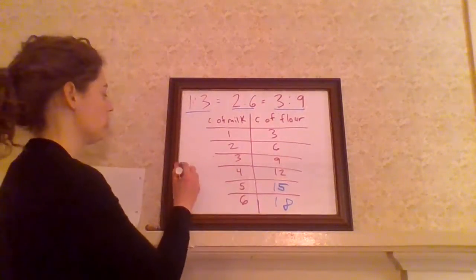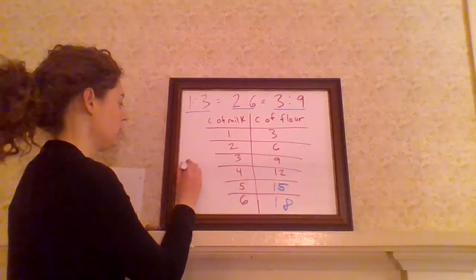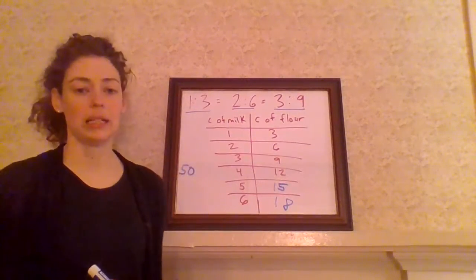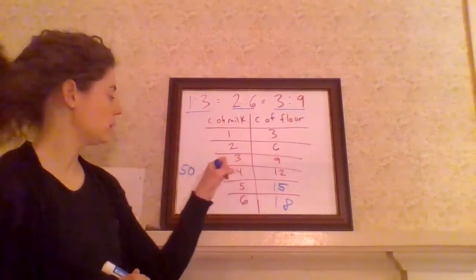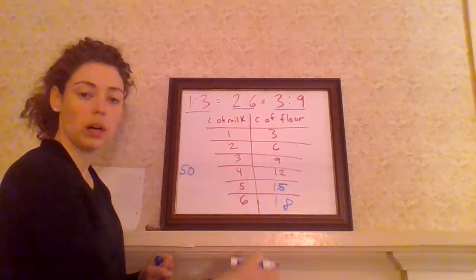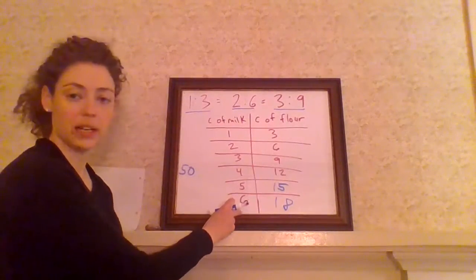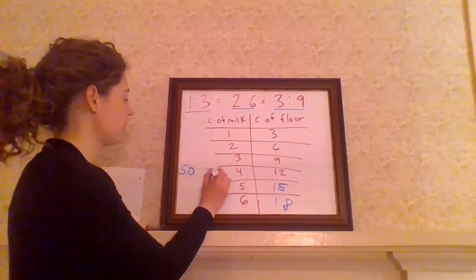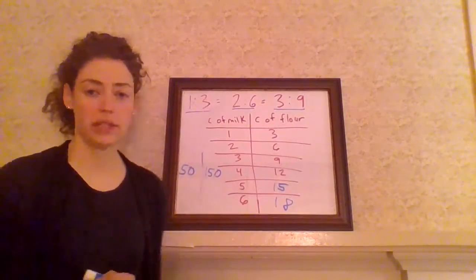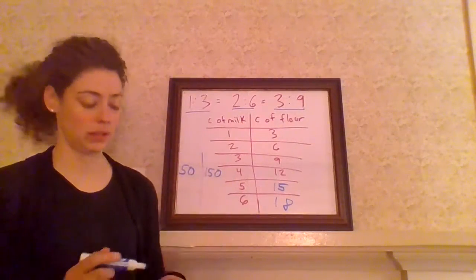So we could even pick a huge number, like 50 cups of milk. And that would be a lot of pancakes. And how many cups of flour will that be? So instead of skip counting all the way till we got to 50 here, we can just multiply. So 50 times three, 150. So we would need 150 cups of flour for 50 cups of milk.